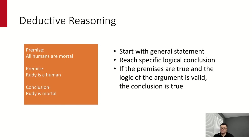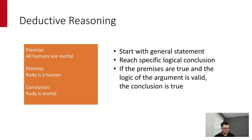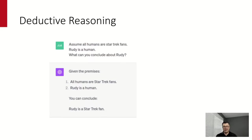There is a sub-area of reasoning called deductive reasoning. With deductive reasoning you start out with a general statement to reach a specific logical conclusion. You have premises, and if the premises are true and your argument is valid, you can conclude the conclusion is true. For example: all humans are mortal; Rudy is a human; therefore Rudy is mortal. I modified this to be more nonsensical — 'assume all humans are Star Trek fans; Rudy is a human; what can you conclude about Rudy?' — and put it into ChatGPT, which ended up with the conclusion you'd expect.